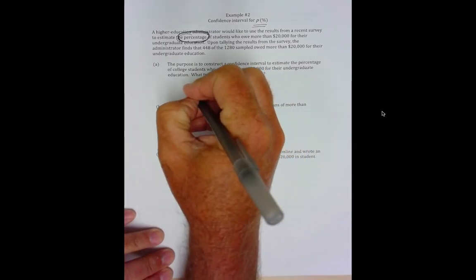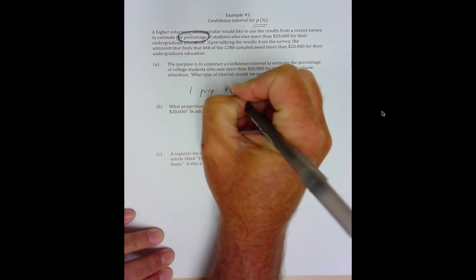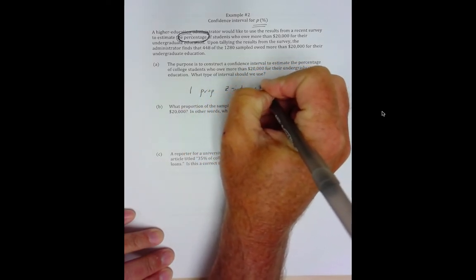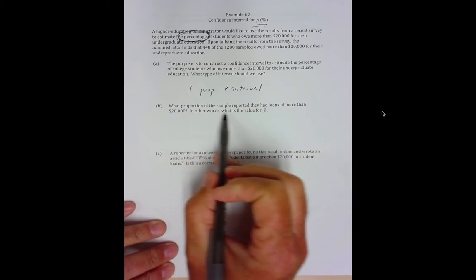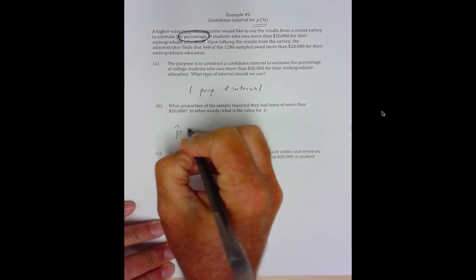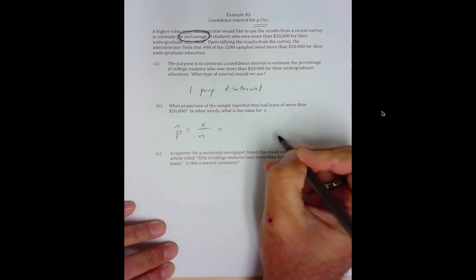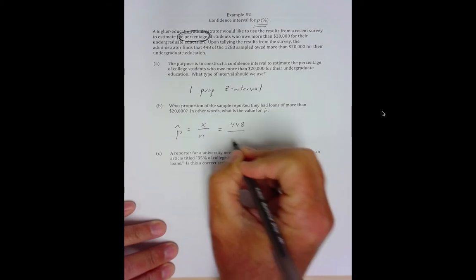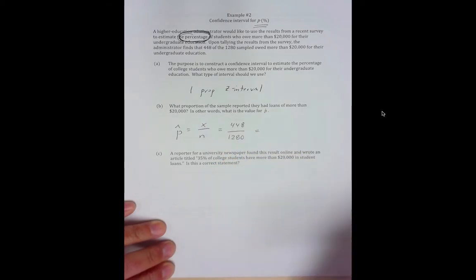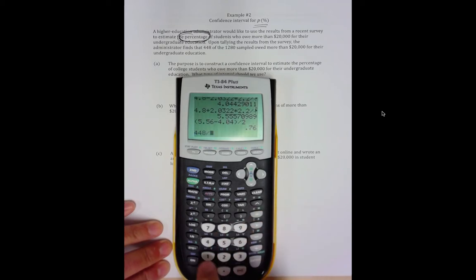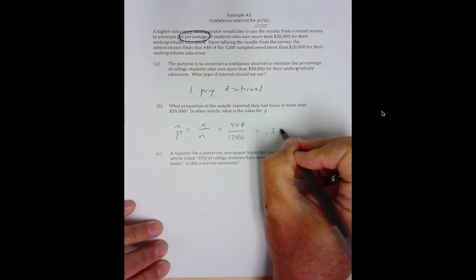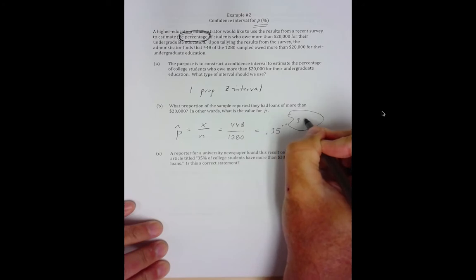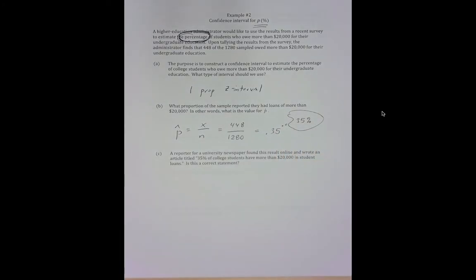What type of interval is this? This is actually called a 1 prop Z interval. What proportion of the sample reported they had loans? In other words, what's the value for P hat? Well, remember P hat is the count out of the total. So our count is 448 out of 1280. So 35% of our sample has a student loan debt of $20,000 or more.